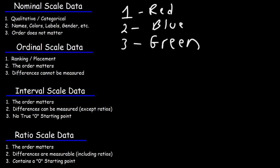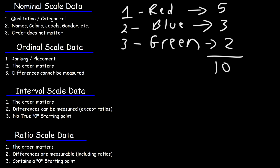Here is an example. If we do a survey and ask 10 individuals what their favorite color is — let's say 5 chose red, 3 chose blue, and 2 chose green out of a total of 10. In terms of percentages, 50% preferred red, 30% preferred blue, and 20% preferred green. So that's one way in which we could use this form of data in calculation.